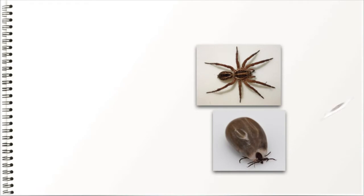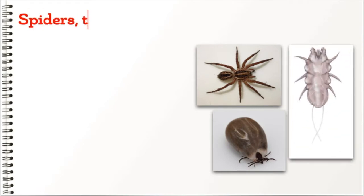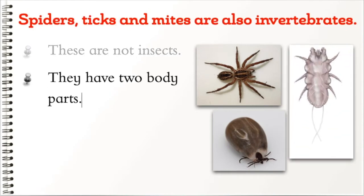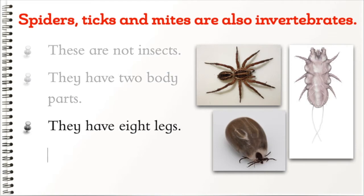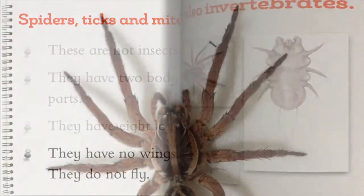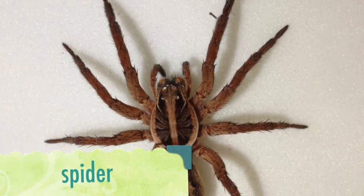Spiders, ticks, and mites are also invertebrates. These are not insects. They have two body parts, they have eight legs, they have no wings, and they do not fly.